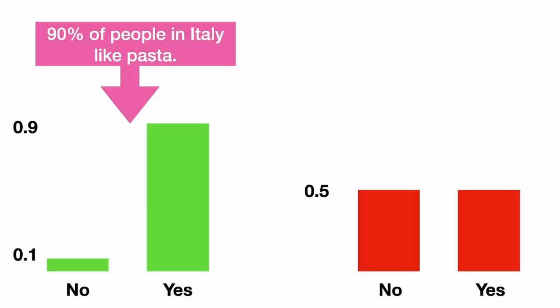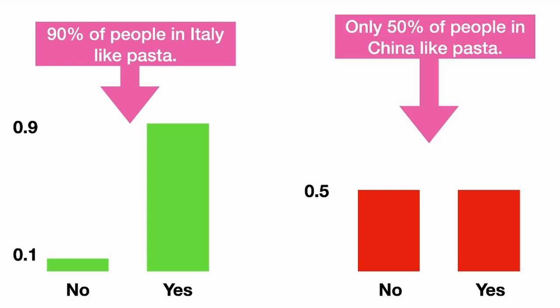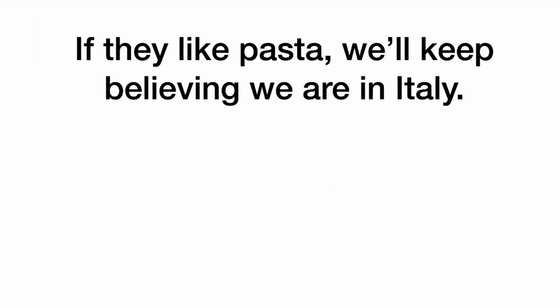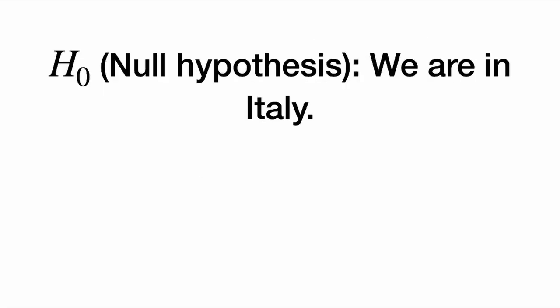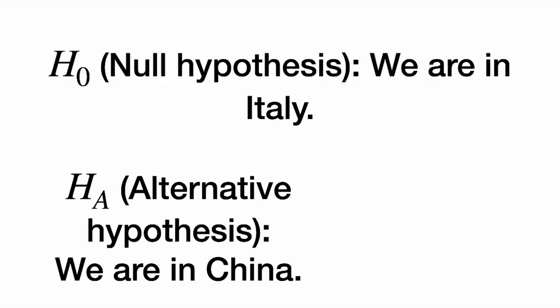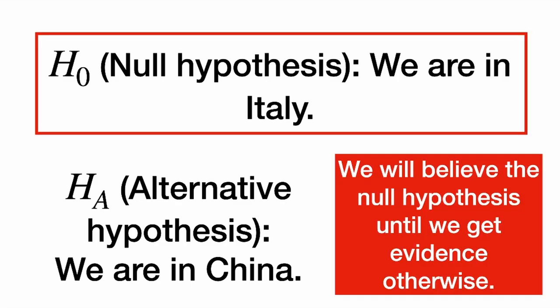90% of people in Italy like pasta, but only 50% of people in China like pasta. If they like pasta, we'll keep believing we are in Italy, and if they don't like pasta, we'll now believe that we are in China. Our null hypothesis is that we are in Italy — that's our default assumption — and our alternative hypothesis is that we are in China, and we're only going to believe that if the person we see does not like pasta.